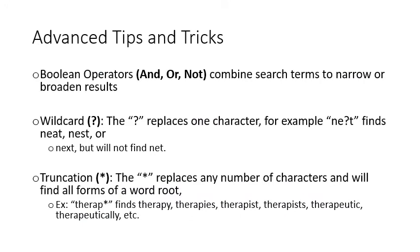I know that was a quick walkthrough of how to do a literature search. I really encourage you to try the example I did yourself to see if you can copy the results — though they may differ slightly as new articles are constantly added. Additionally, I want to give you some advanced tips for searching. You can use Boolean operators — AND, OR, or NOT — to combine search terms and narrow or broaden your results. You likely saw those in the dropdown menu in the search interface.